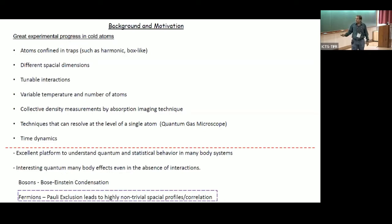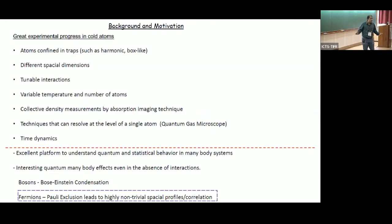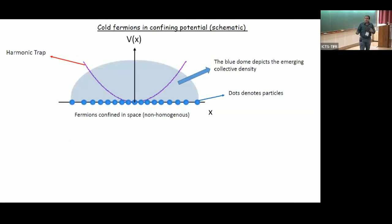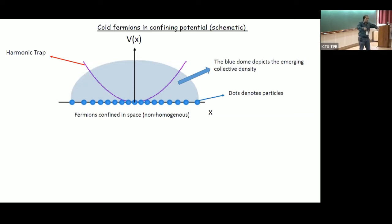Experimentally there's a lot of motivation; it's an excellent platform to understand quantum and statistical behavior in many-body systems. I'm going to focus on fermions in this talk — non-interacting fermions — but of course because they are fermions you have the Pauli exclusion principle, and we are going to see what kind of physics results from the Pauli exclusion principle.